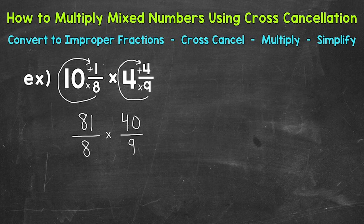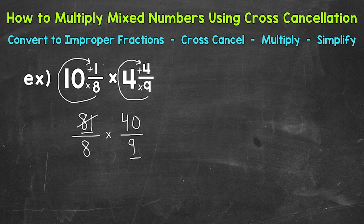For example, we have 81 and 9 — 81 here and 9 diagonally. A common factor between 81 and 9 is 9. So we can divide both of those by 9. Let's cross them out and divide them both by 9. 81 divided by 9 is 9, and 9 divided by 9 is 1. That gave us some smaller numbers in value and easier numbers to work with.